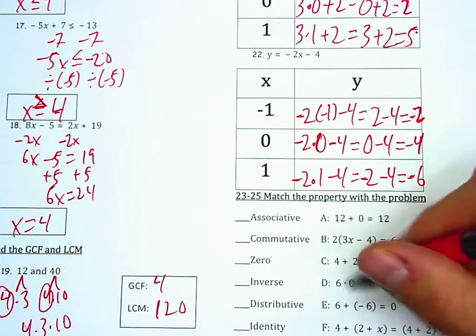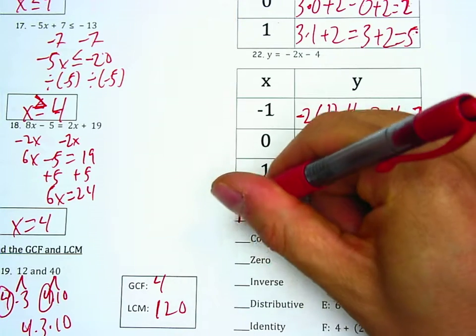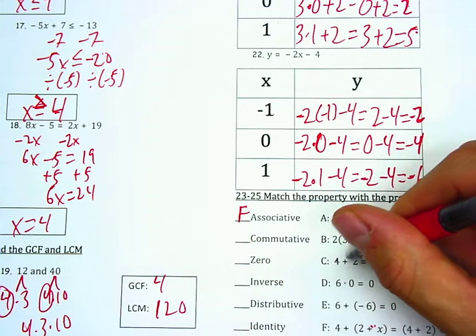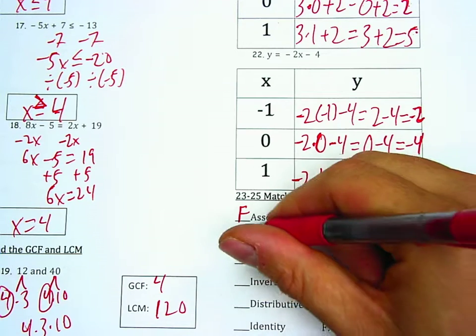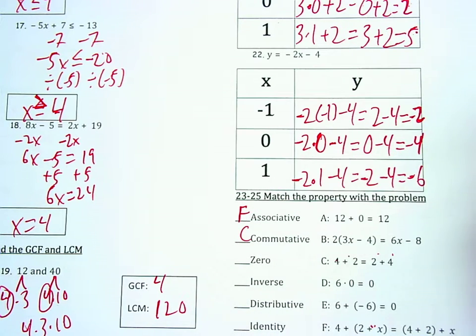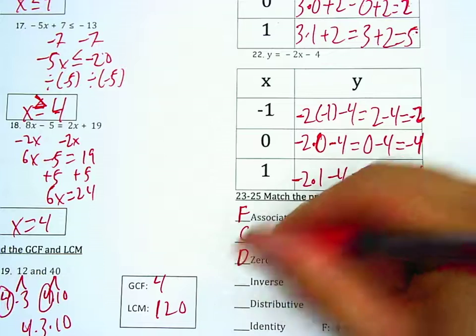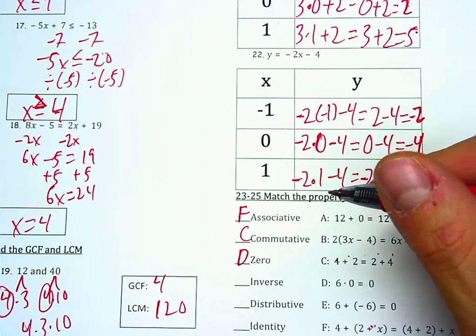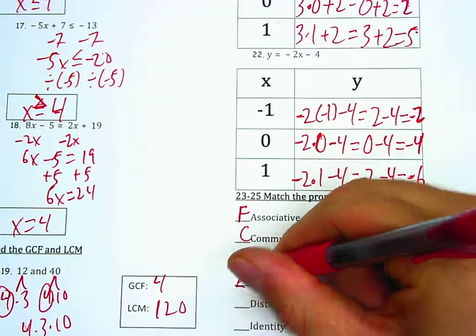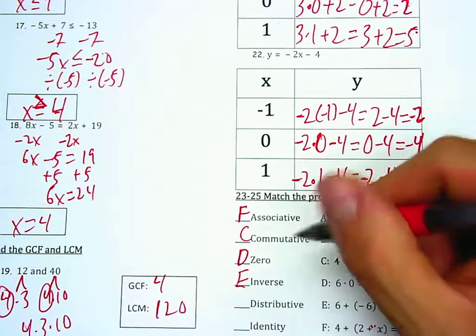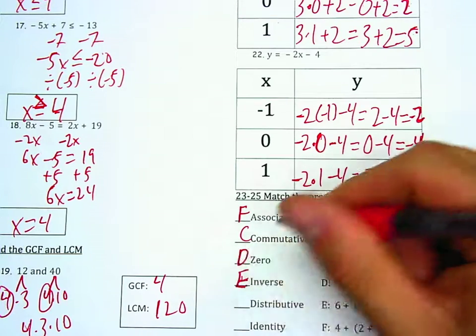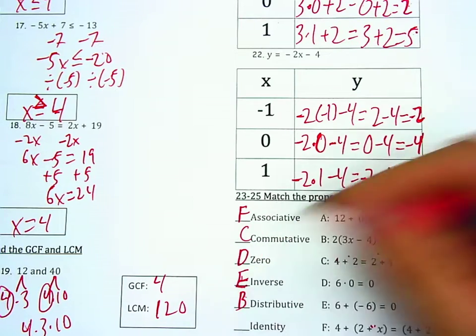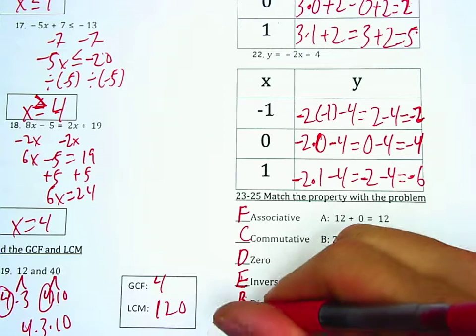Associated property is when you move the parentheses, letter F. Commutative is when the numbers change spots, letter C. Zero is when you multiply by 0, letter T. Inverse when you add the opposite, letter E. Distributive is when you eliminate the parentheses, letter B. And the identity is when you add 0, letter A.